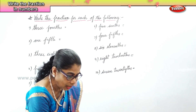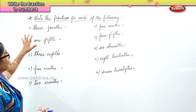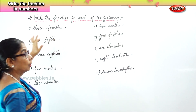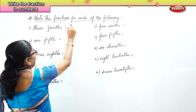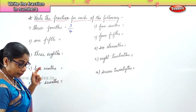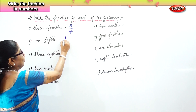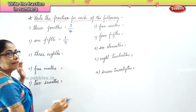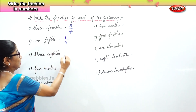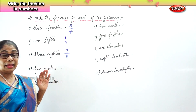Now I have written here words, and you are going to write down fractional numbers for each of these. Three-fourths — what is three-fourths? Three by four. One-fifth — this is one-fifth. Words are given, you are writing the fractional number. Three-eighths, three-eighths.